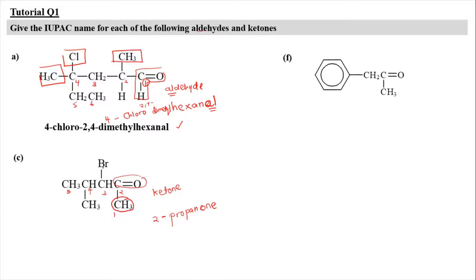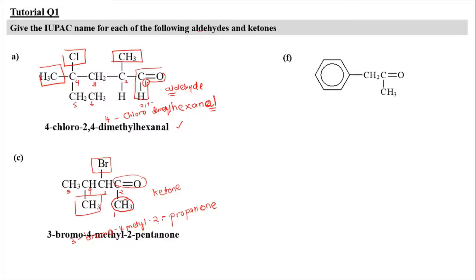We have 2 substituents: bromine at carbon number 3 and methyl at carbon number 4. Writing bromine first alphabetically, we get bromo at carbon 3 and methyl at carbon 4. So the full name is 3-bromo-4-methyl-2-pentanone — pentanone because it has 5 carbons.